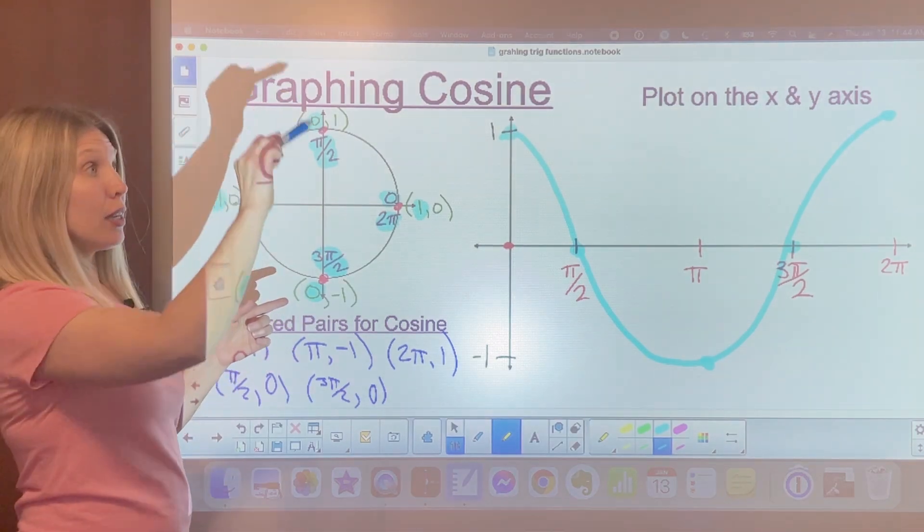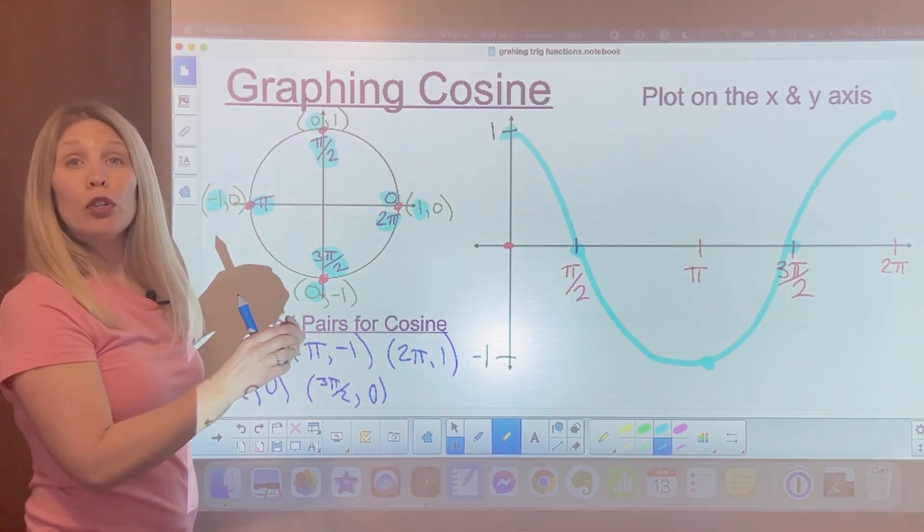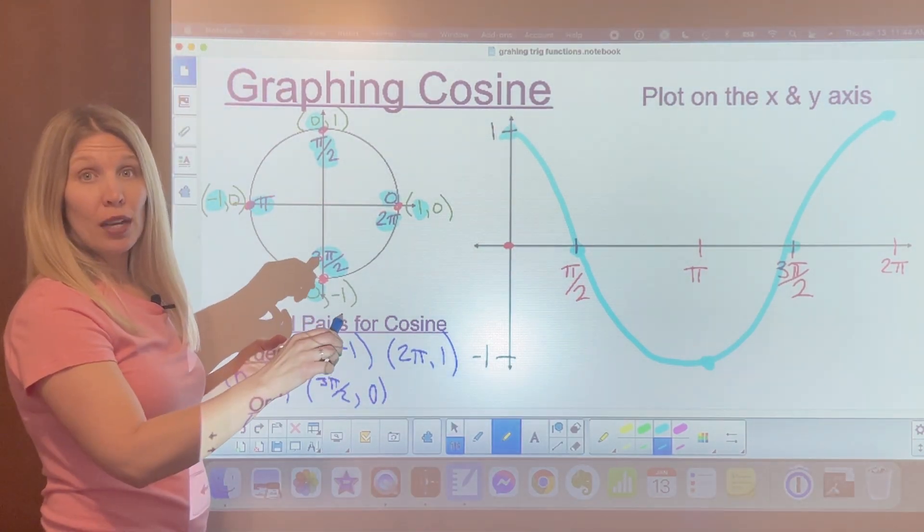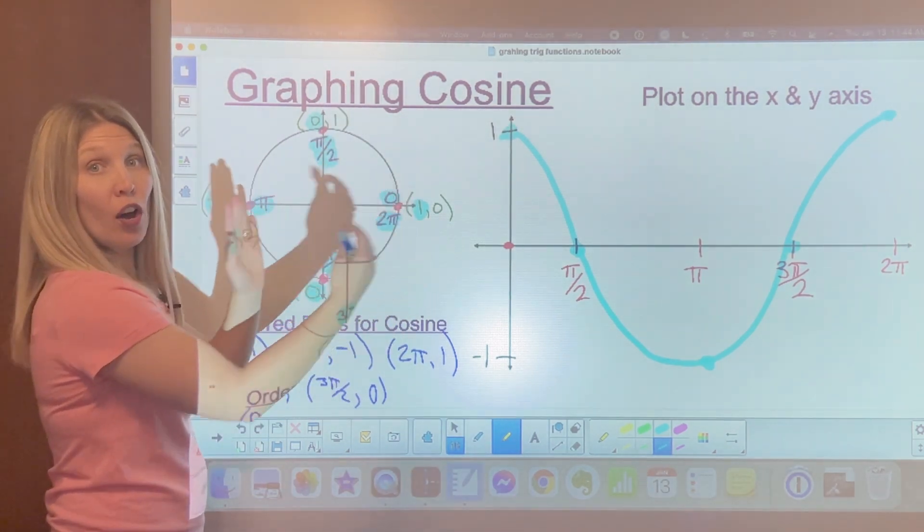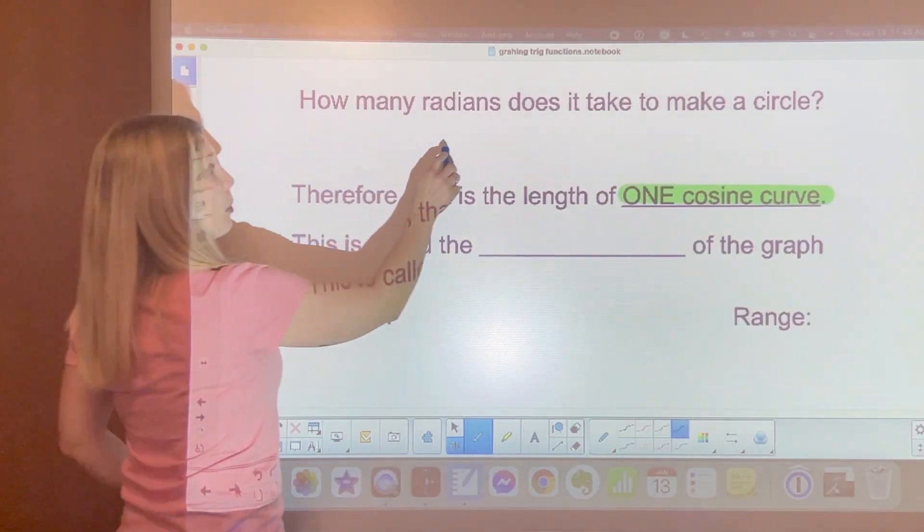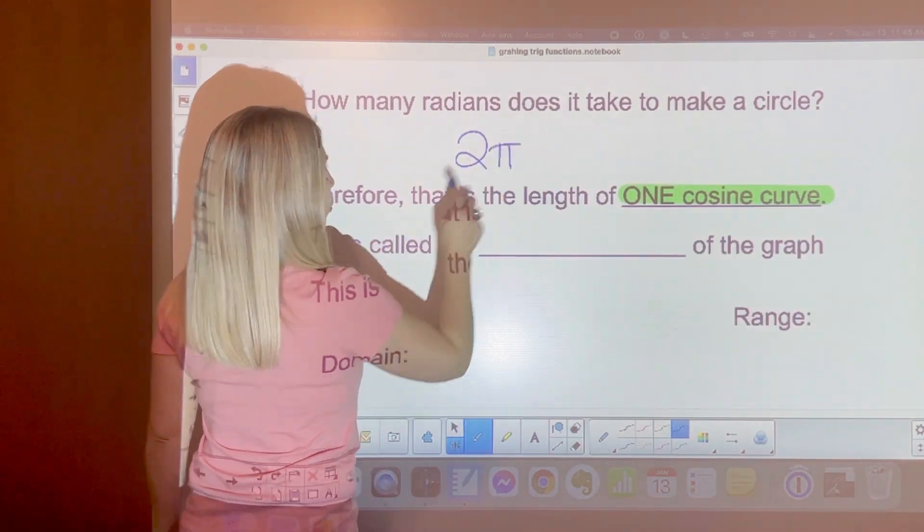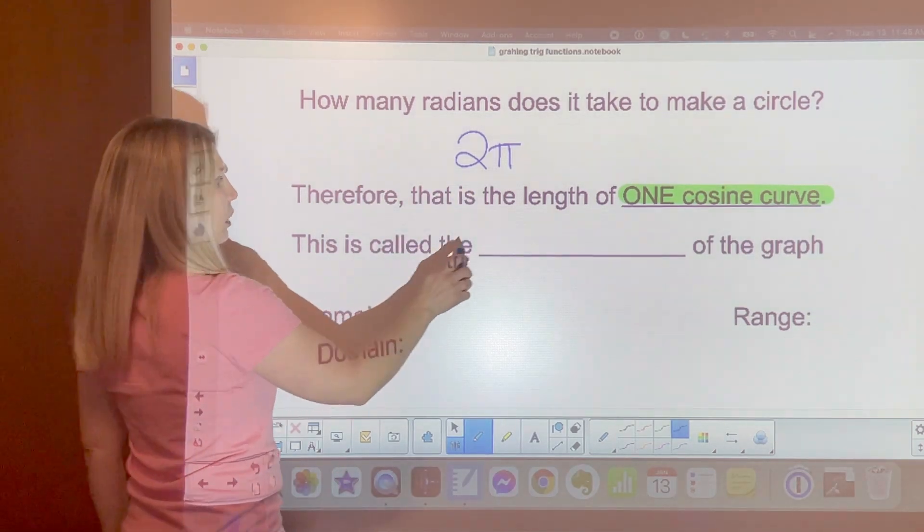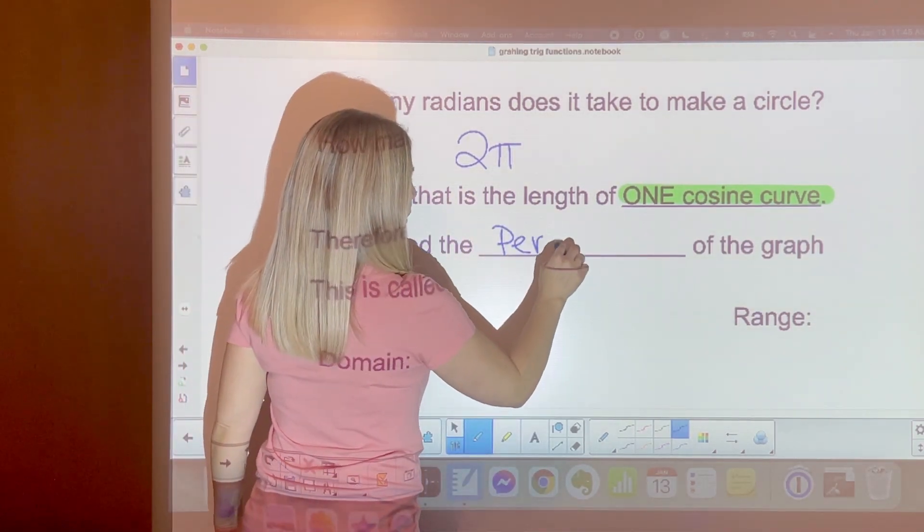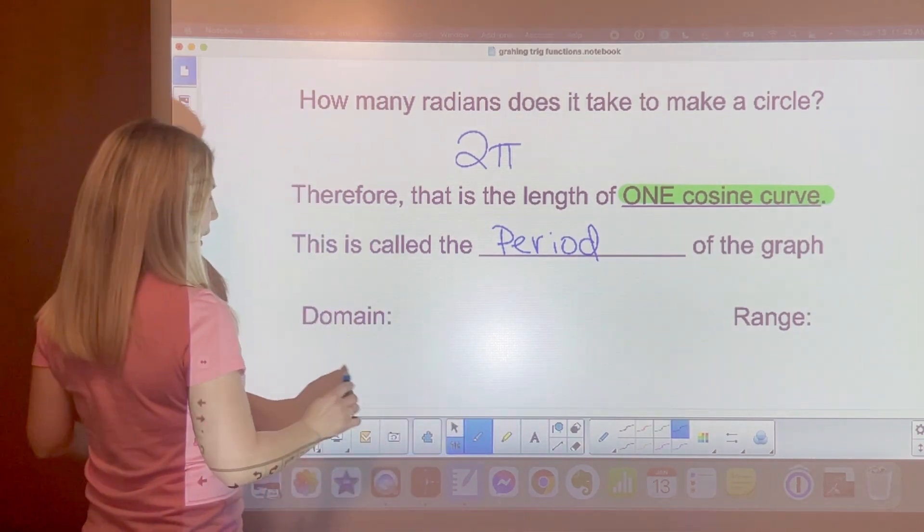If you would continue the sine and cosines graph, you would see they have the same curvature. They're just offset from one another a little bit. Again, how many radians does it take to make a circle? 2 pi. That is one length of the cosine curve. It's called the period of the curve.